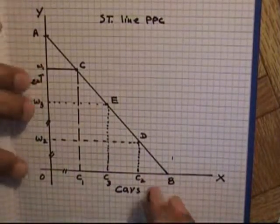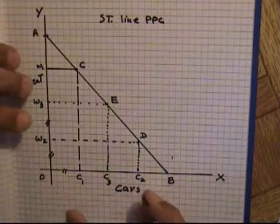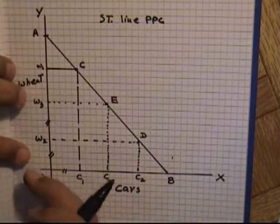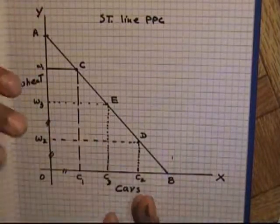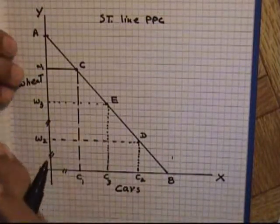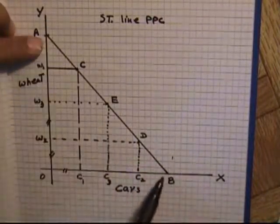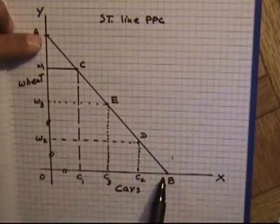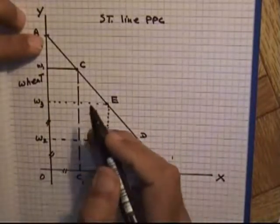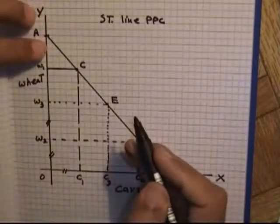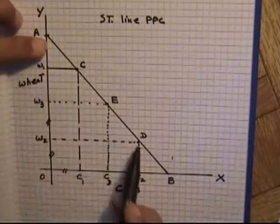There is no direct comparison between wheat and cars since cars are a comfort good whereas wheat is a necessity. But what we can understand is how moving resources from one sector to another affects the possibility of production. All the points on this curve assume that all resources in the country are fully employed, with no underutilization or overutilization of resources.